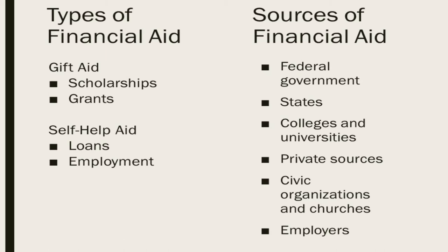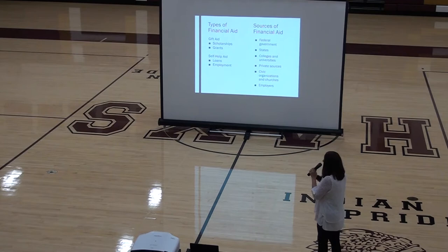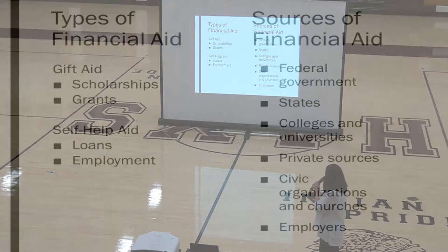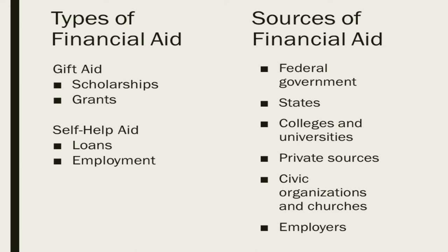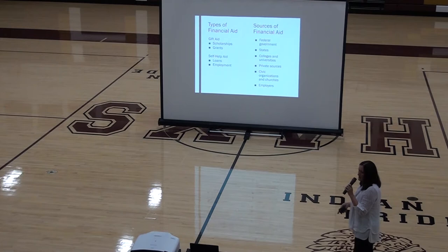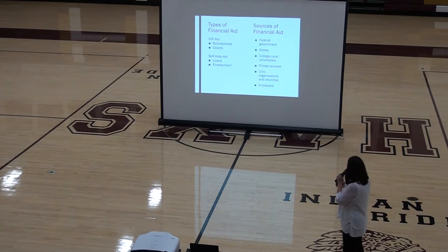There are two types of financial aid: gift aid and self-help aid. Gift aid — scholarships or grants — is money the student receives and does not have to pay back, as long as they attend their classes. Self-help aid includes money the student has to do something to receive. For example, work-study requires the student to get a job and earn that money. For loans, the student agrees to borrow money and someday pay it back.